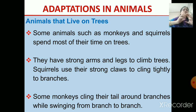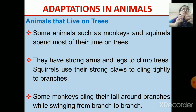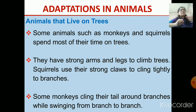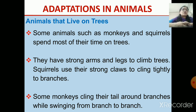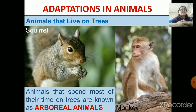They climb on the branches and climb the trees. They have got strong claws, and with those claws they cling to the branches so that they cannot fall. Monkeys also use their tail to cling from one branch to another. This is how they have strong arms and legs to climb. Here are the pictures — you have seen these animals many times.